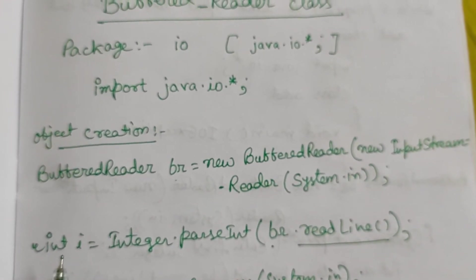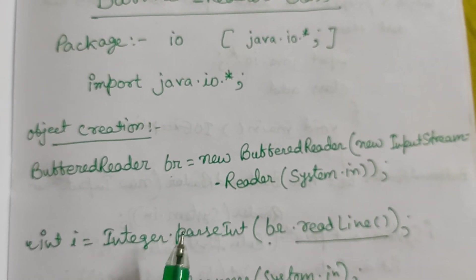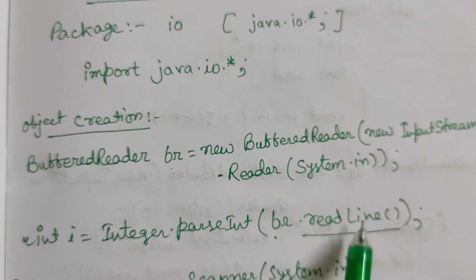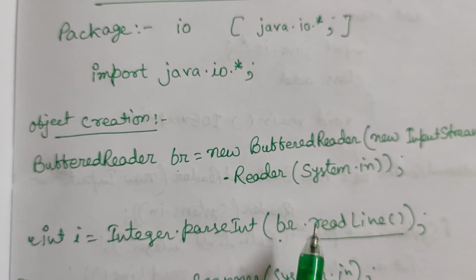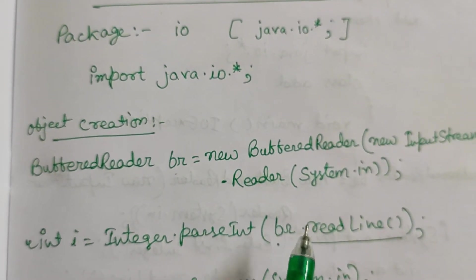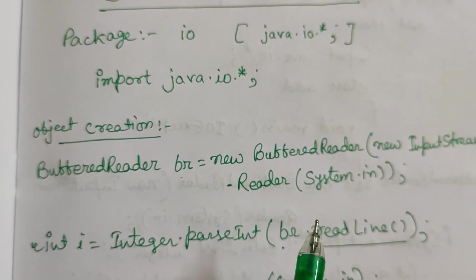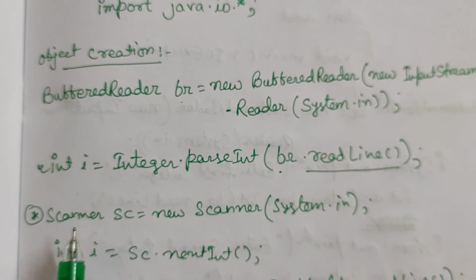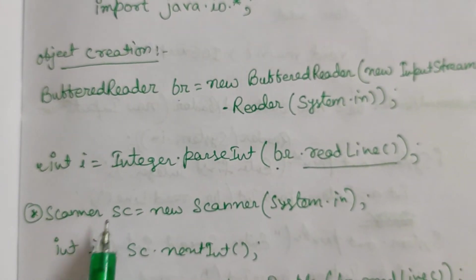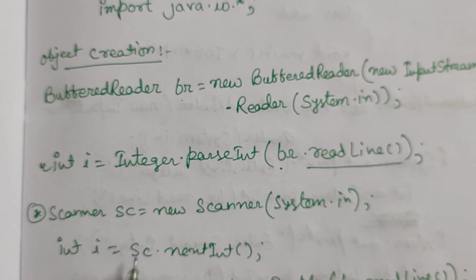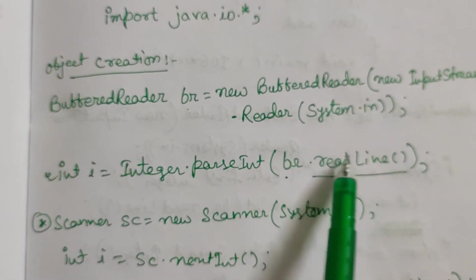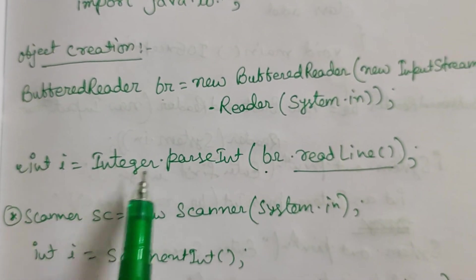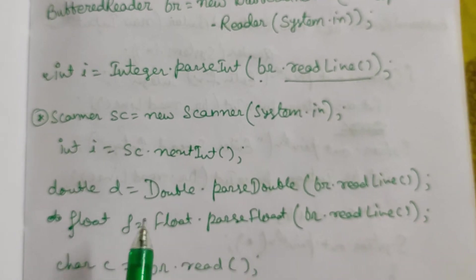Now, how do we take input? Suppose we want to take input as an integer: int i = Integer.parseInt(br.readLine()). We use the readLine() function to take input, but BufferedReader cannot convert the string value into a primitive data type on its own. So we need a wrapper class — Integer.parseInt() — to do that conversion. Compare this to Scanner: with Scanner sc = new Scanner(System.in), you simply write sc.nextInt() directly.